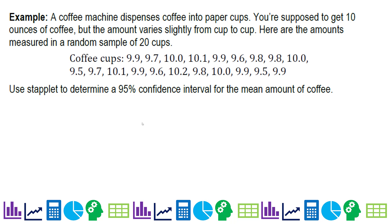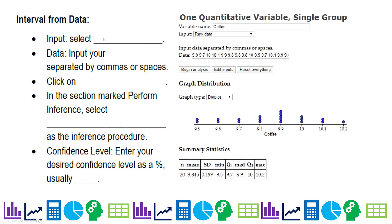So now we have a coffee machine that's dispensing coffee into paper cups. You're supposed to get 10 ounces of coffee, but the amount varies slightly from cup to cup. Here are the amounts measured in a random sample of 20 cups. And they want us to do a 95% confidence interval. And now we're just going to use the staplet. If you have raw data, that's the only thing I do anyway. So I would use technology. This time instead of selecting mean and standard deviation on the right here, you're going to select raw data. You input your data separated by commas or spaces. I tend to do spaces.